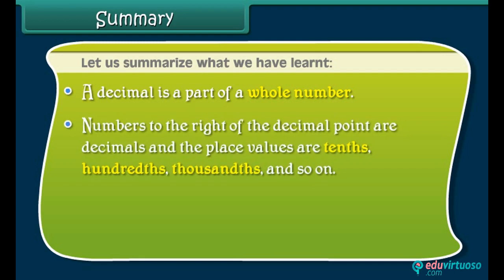Numbers to the right of the decimal point are decimals, and the place values are tenths, hundredths, thousandths, and so on.